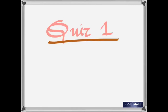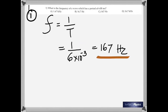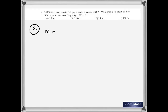Here are the answers to quiz number one. The first question is straightforward: frequency is the reciprocal of the time period. So all you do is 1 divided by 6 times 10 to the negative 3, because it's in milliseconds — that's why you have 10 to the negative 3. The answer is 167 Hertz.